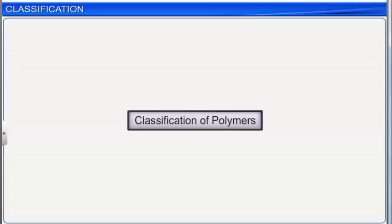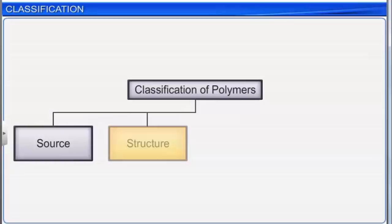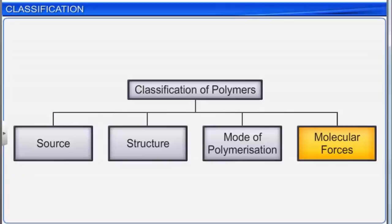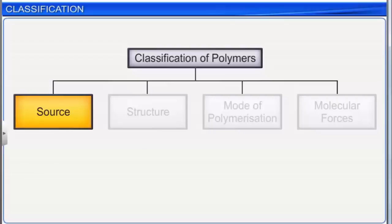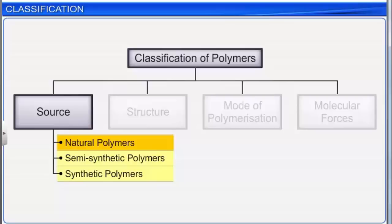Polymers can be classified in a variety of ways — on the basis of their source, structure, mode of polymerization, and molecular forces. Depending upon the source from which they are obtained, polymers are categorized into three types: natural polymers, semi-synthetic polymers, and synthetic polymers.